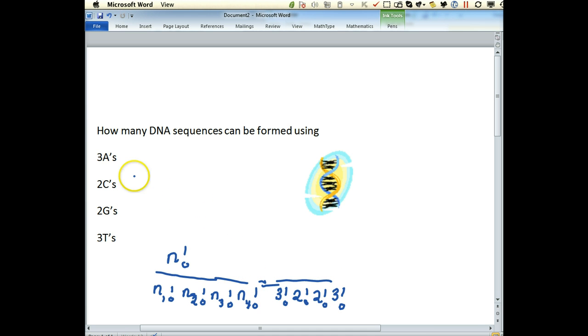On the top we put the total number of bases in our strand. If we add three plus two plus two plus three, there are going to be ten bases in this particular strand of DNA.